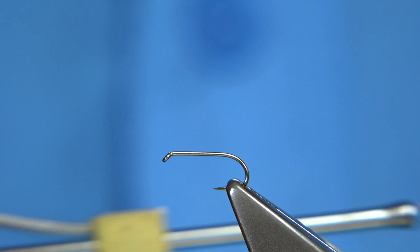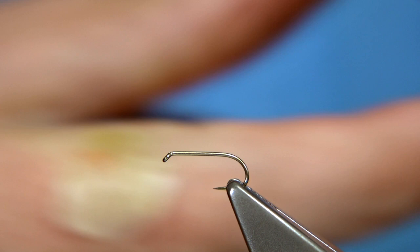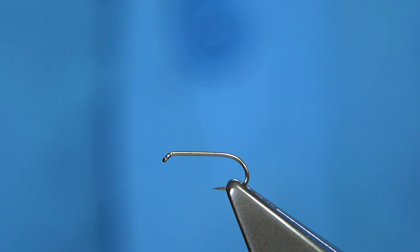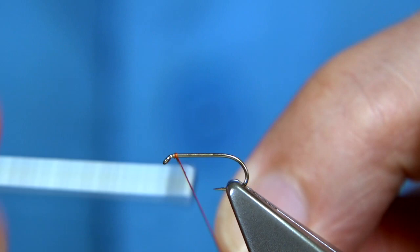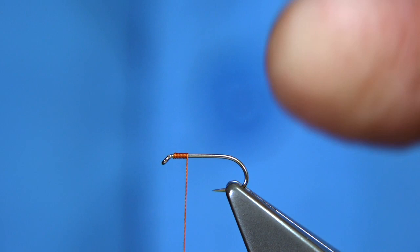The first thing you have to do is run the wax through it, you have to wax this silk or this thread, and then basically start it. I usually start a turn or so from the eye and then work my way down. Remove the waste piece and then wind to the tip or to the point of the hook.